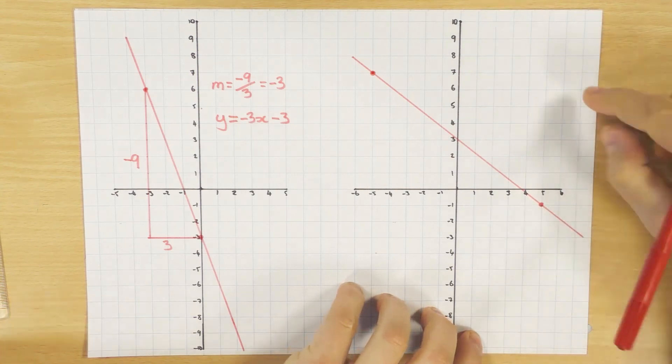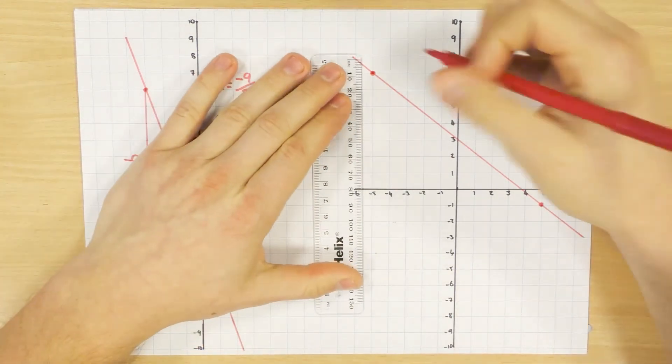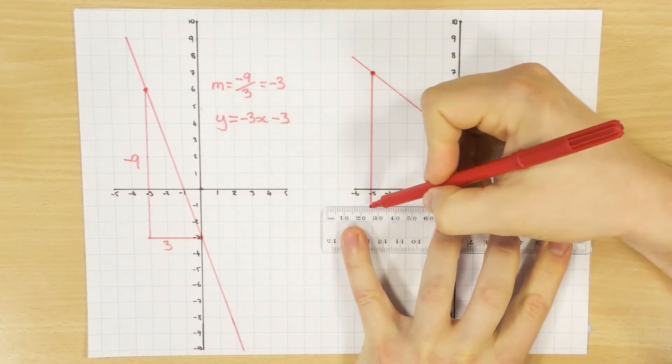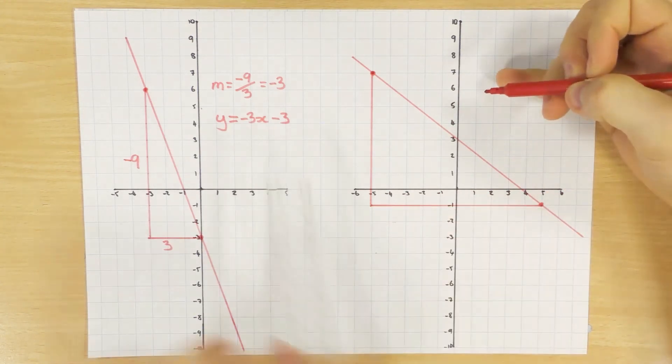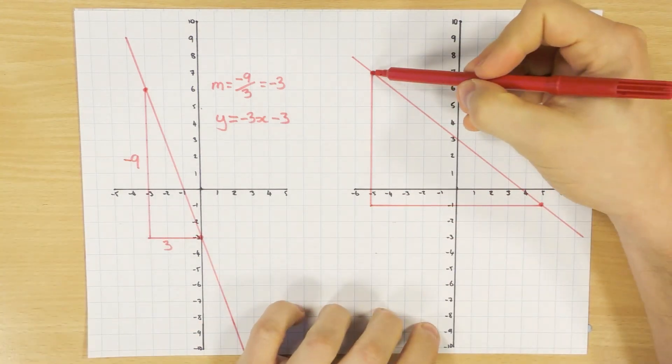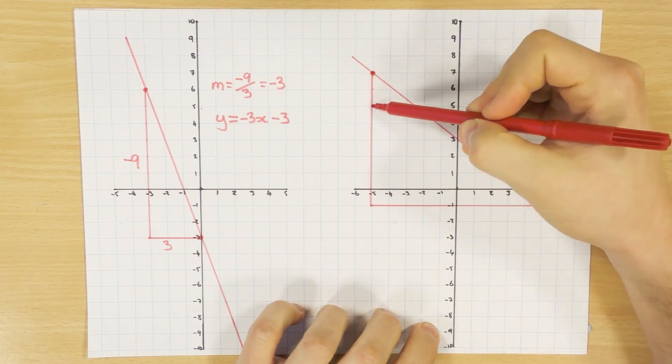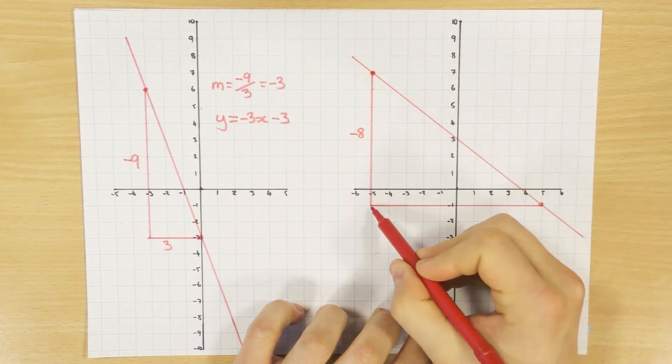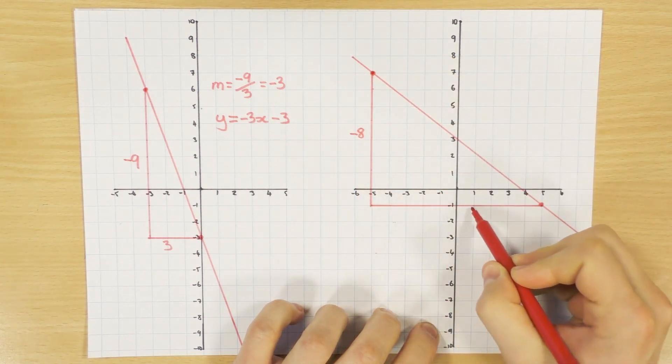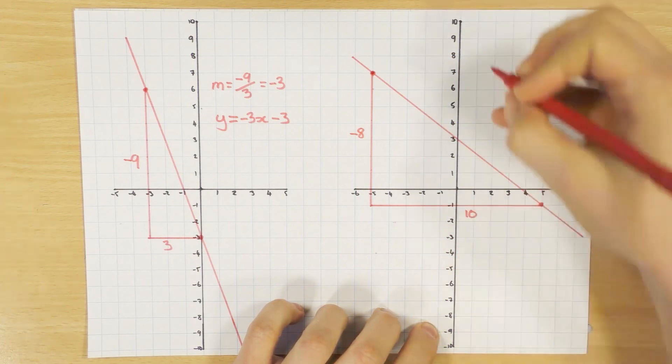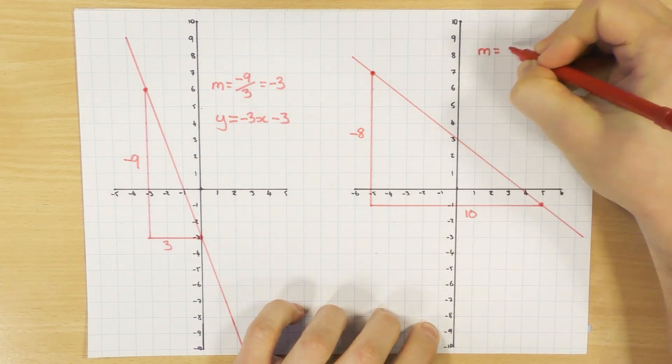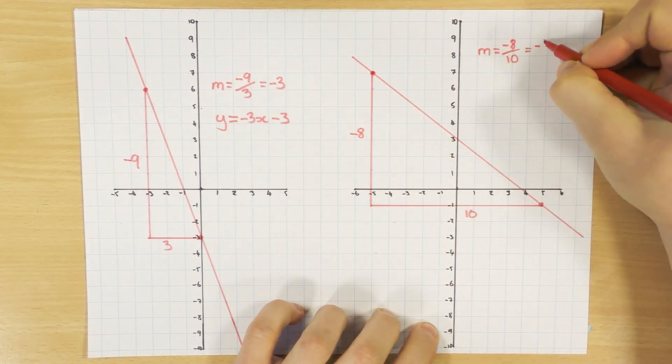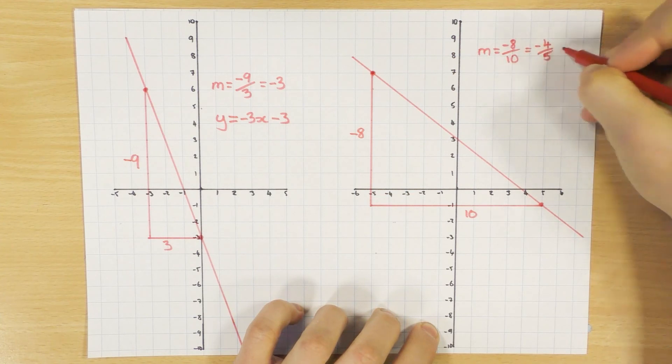So using the method of finding two coordinates, that's what I'm going to do now. There's two coordinates on the line. I draw my triangle like so. So again, left to right, I'm going down. So 1, 2, 3, 4, 5, 6, 7, 8. So minus 8 and in x, I go across 1, 2, 3, 4, 5, 6, 7, 8, 9, 10. So the gradient here is minus 8, which is the change in y, divided by 10. And if you simplify that, you get minus 4 over 5 by halving both of them. Now, without using that method of using the two coordinates, that is very hard, I'd say impossible, to try and guess that's minus 4 over 5. So by using the two coordinates, it's much easier to spot the gradient.